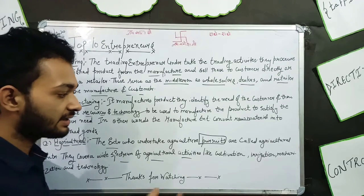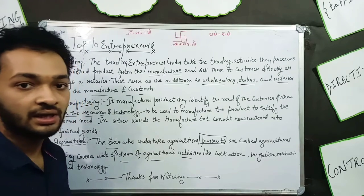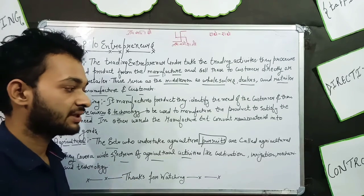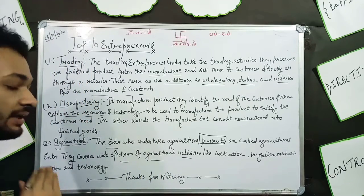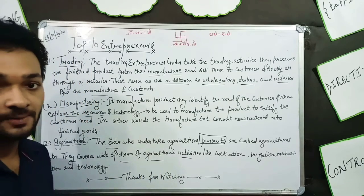These agricultural activities include cultivation, irrigation, mechanism, and technology.